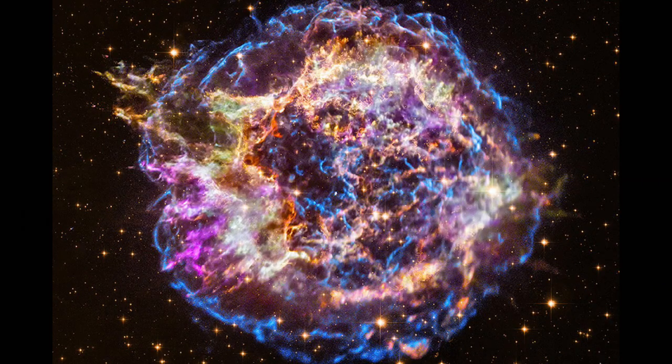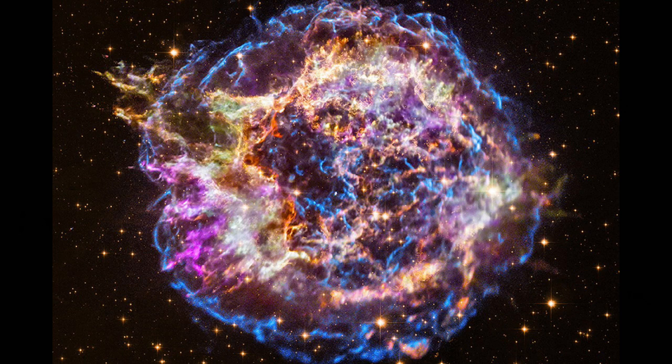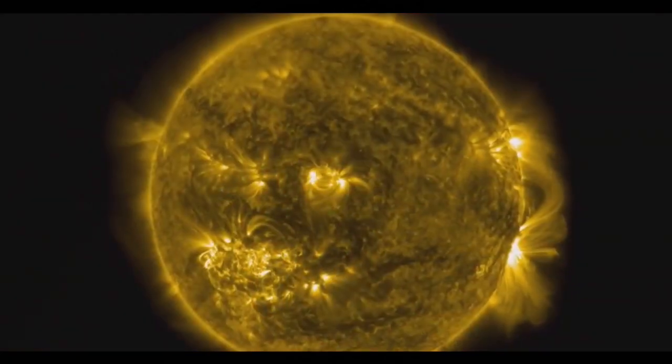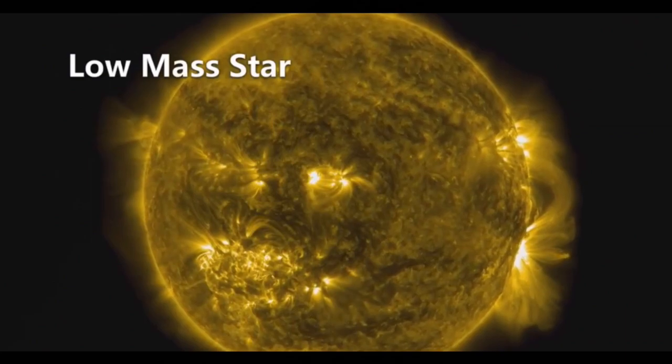It is believed by most scientists that the elements making up our Earth are from a supernova in the constellation Cassiopeia. You can tell what population a star is by its metallicity.